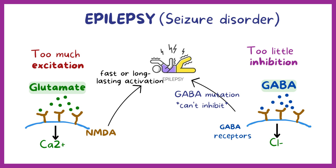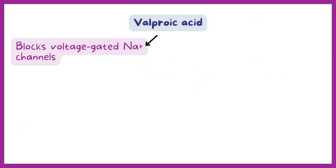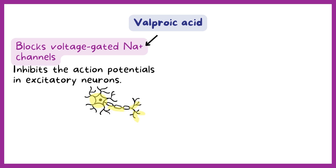We can manage seizure disorders by increasing the effect of inhibitory neurons or decreasing the activity of excitatory neurons. Valproic acid acts by different mechanisms. First, it blocks voltage-gated sodium channels, which inhibit the action potentials in excitatory neurons.